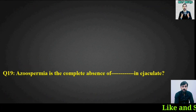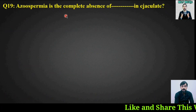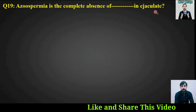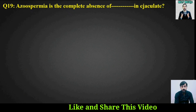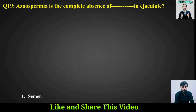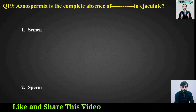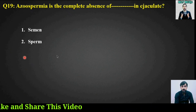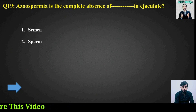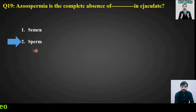MCQ number nineteen: Azoospermia is the complete absence of what in ejaculate? Options are: semen or sperm. The right answer is option number two — azoospermia is the complete absence of sperm in ejaculate.